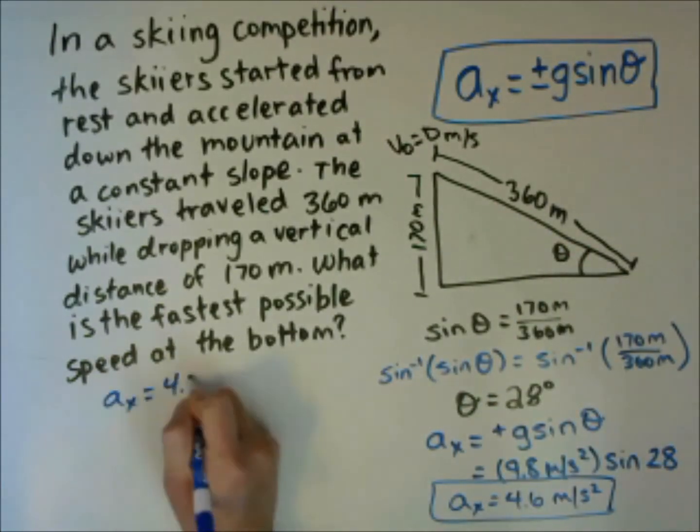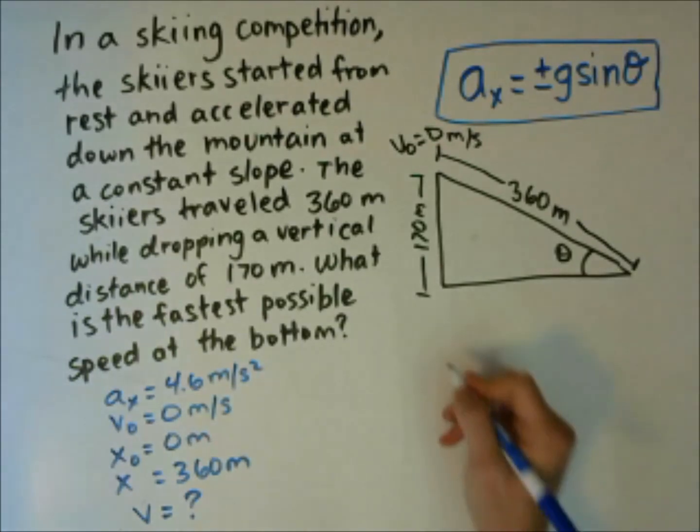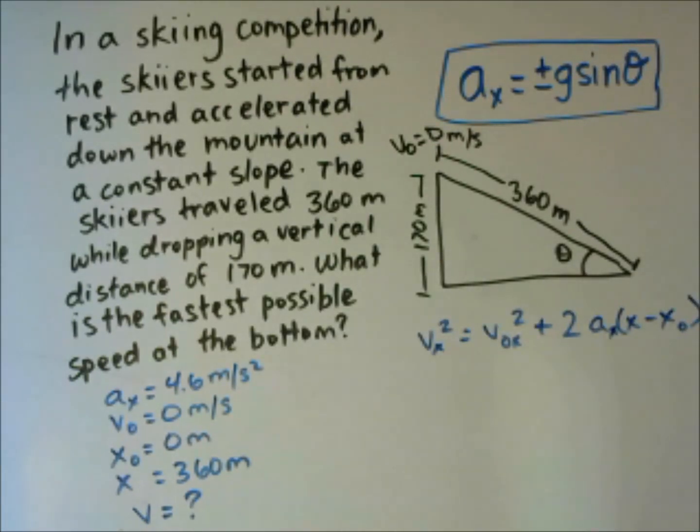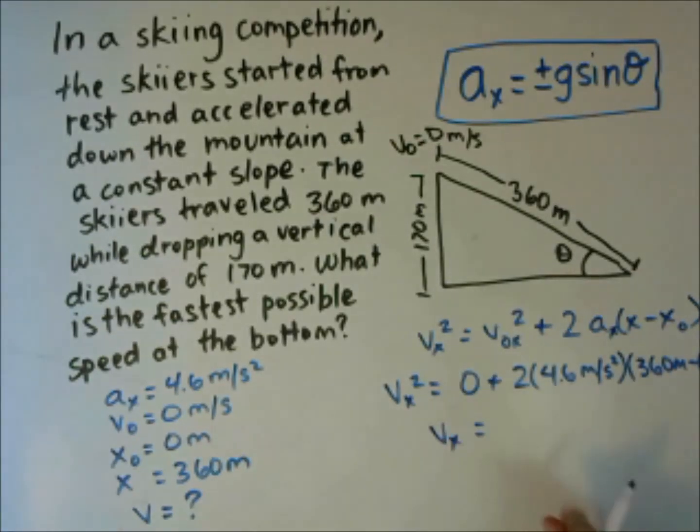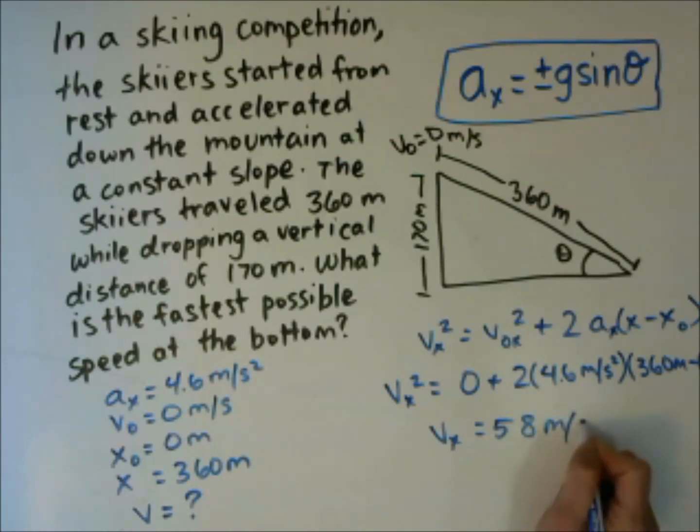So now we have our acceleration. We are going to write our givens. We know our acceleration, our initial velocity, our initial position. And we want to find our final velocity. Which equation will help us find our final velocity with those values? We are going to pick the third kinematics equation. We are going to plug our numbers in. Our final velocity in the x-direction is what we are solving for. Multiply these numbers together and then take the square root. Once you have taken the square root, you should get a final velocity of 58 meters per second.